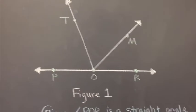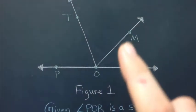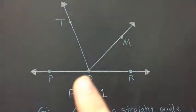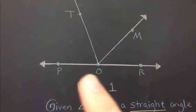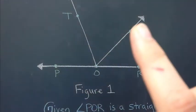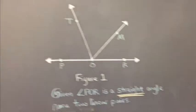The other linear pair—I noticed that ROM shares a ray, OM, with angle MOP. So ROM and MOP would form the other linear pair.